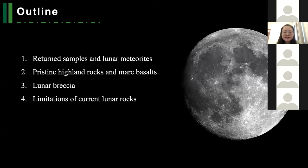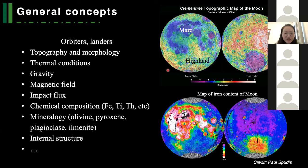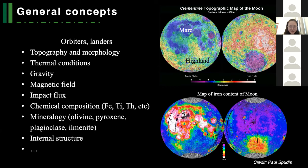We have already learned a lot about the moon through previous exploration missions by orbiters and landers, including the topography, morphology, thermal conditions, and gravity. And most importantly, we get the chemical composition of the lunar surface. For example, this shows the topography map of the moon, and this is the iron content of the moon. We can see it is very heterogeneous — this is an iron-rich area, and this is an iron-poor area. But still, lunar rocks provide valuable information that cannot be replaced by remote sensing techniques.